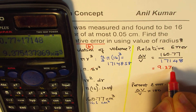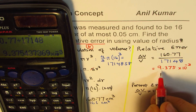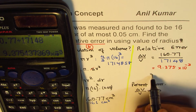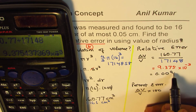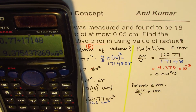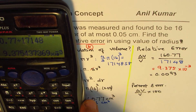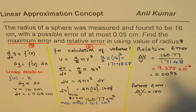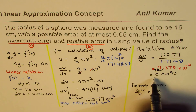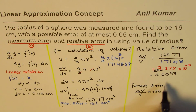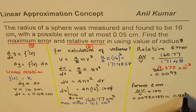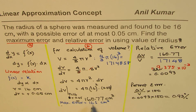So the relative error is 9.375 × 10⁻³, which equals approximately 0.0093. That is a reasonably small error — the approximation is not as bad as it looked. For percent error, 0.0093 × 100 = 0.93%, which is less than one percent, so it's not bad at all.